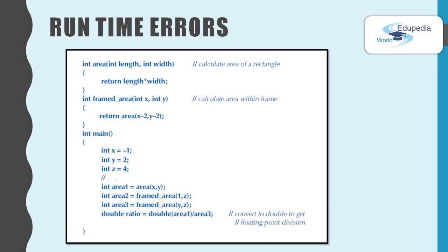Now let's move on to runtime errors. If your program has no compile time errors and no link time errors it will run — this is where the fun really starts. When you write the program you are able to detect errors, but it is not always easy to know what to do with an error once you catch it at runtime. Take a look at this example.